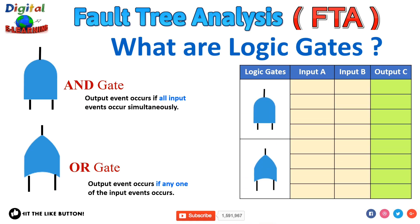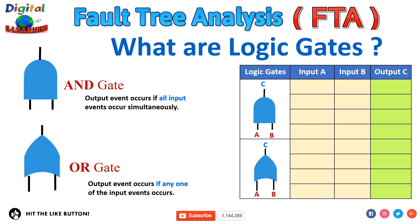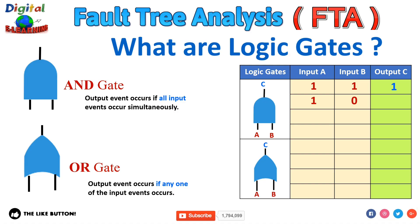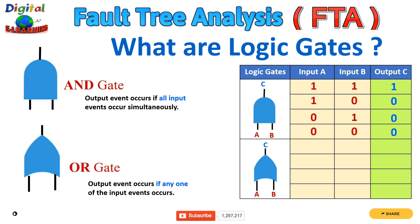Let's get a clearer picture of the AND gate and OR gate. For the AND gate, suppose we have inputs A and B feeding into an AND gate to produce output C. For the AND gate condition, all input events must occur simultaneously. If A is 1 and B is 1, we get output 1. If A is 1 and B is 0, we get no output. If A is 0 and B is 1, we get no output. And if both are 0, we get no output.